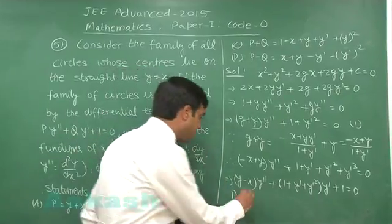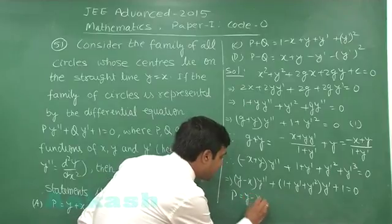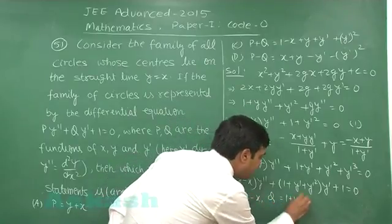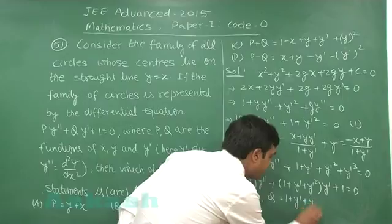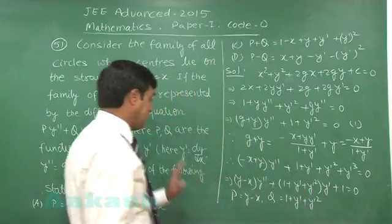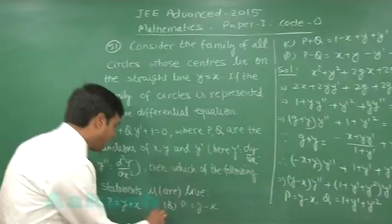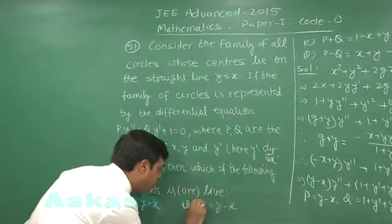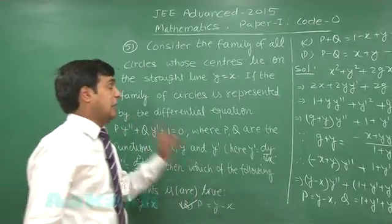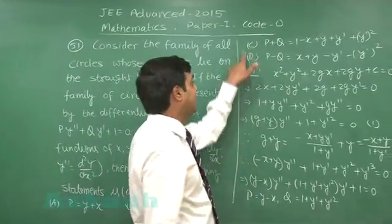From there we have p = y − x and q = 1 + y' + (y')². So option A is not correct while option B is correct since p = y − x. Now let us look for options C and D.